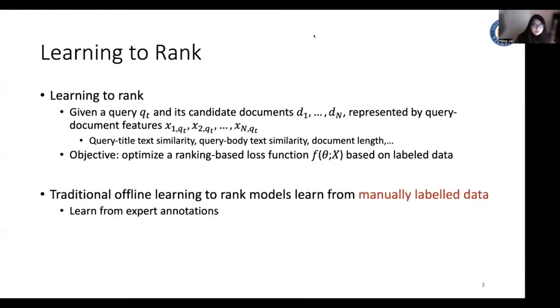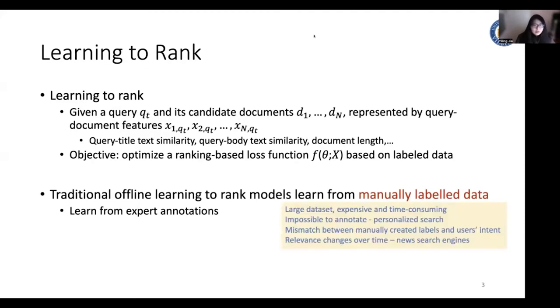Traditional offline learning to rank models directly learn from manually labeled data, for example, the expert annotations. However, to construct such a data set, it is very expensive and time consuming. And for some applications such as personalized search, it is almost impossible to have such annotations.